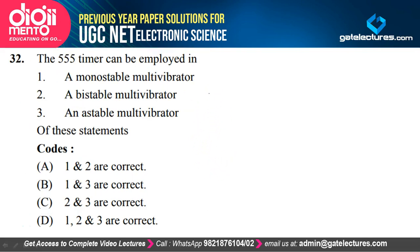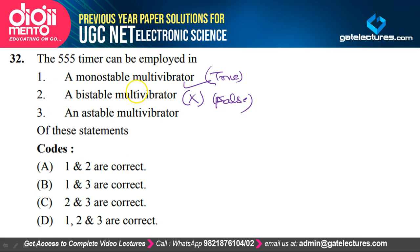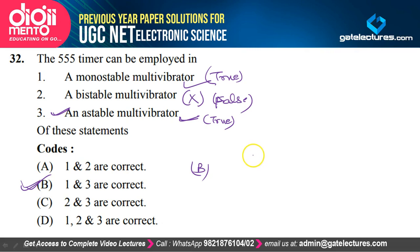A 555 timer can be employed in a monostable multivibrator — that is true. It cannot be used in designing a bistable multivibrator — that is false. A 555 timer is also used for designing an astable multivibrator — so statements 1 and 3 are true, and option B is correct. Bistable multivibrator cannot be designed using op-amps or 555 timers, but monostable and astable multivibrators can easily be designed using them.